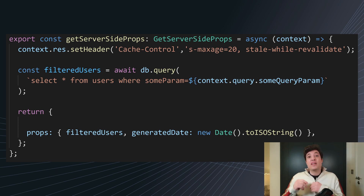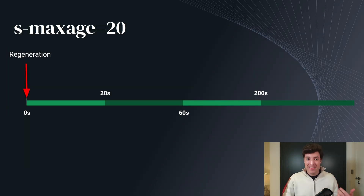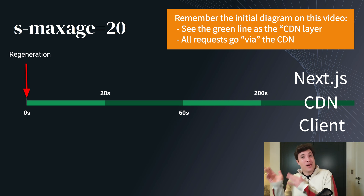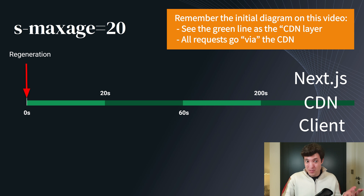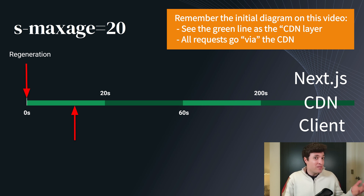So after the 20 seconds, if a user hits that page, that user will receive that page as-is, and Next.js behind the scenes will start a revalidation. Let's do a timeline as if we only have the s-maxage, and then another timeline as if we have s-maxage and stale-while-revalidate, so you can see the differences. If we get the page between zero and 20 seconds, we get that page immediately — exactly the same as before when we were using incremental static regeneration from Next.js.